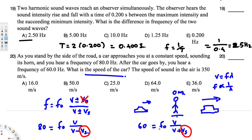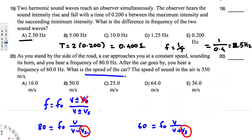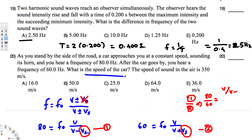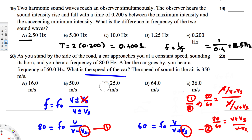Let's divide equation one by equation two. The f₀ terms cancel, and the v terms also cancel. Dividing the fractions, the bottom term flips, giving us: 80/60 = (v + v_source) / (v − v_source).